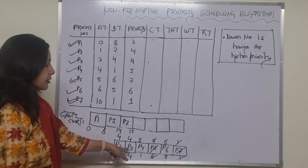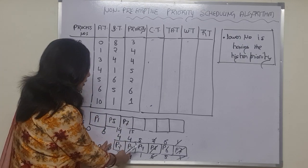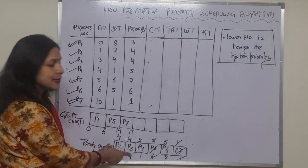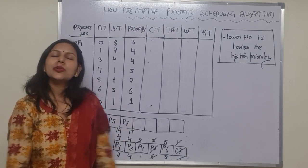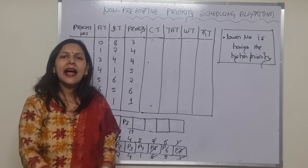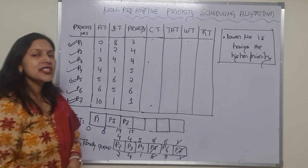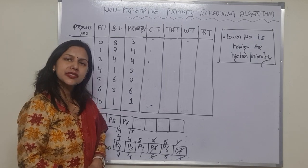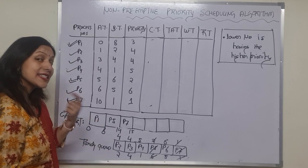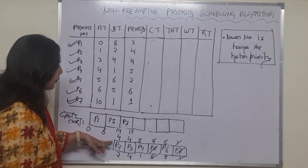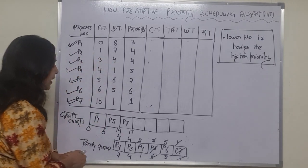Processes P2 and P3 both have priority 4 — there is a conflict since both have the same priority. In this case, FCFS (First Come First Serve) is applied. P2 arrived before P3, so P2 is chosen first.